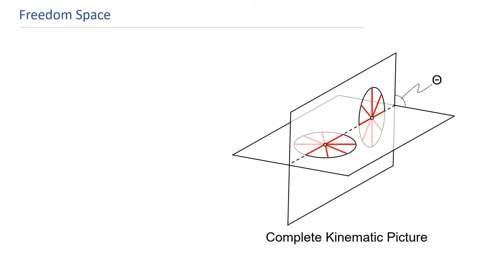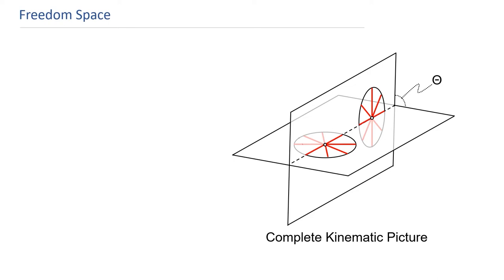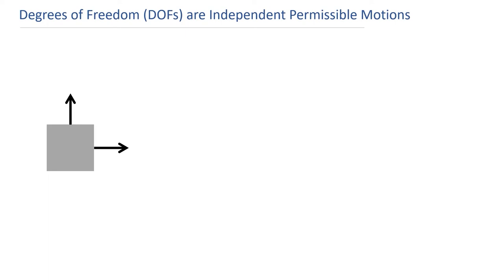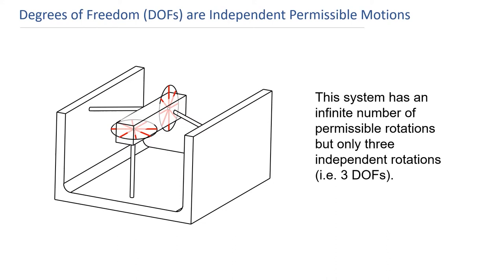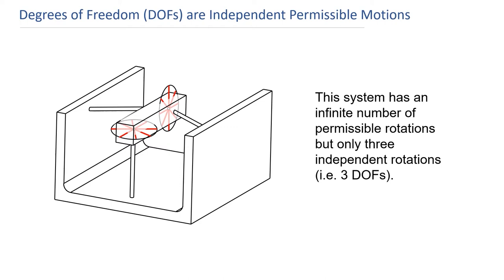A system's freedom space visually depicts its complete kinematics — in a single picture, it portrays all the ways a mechanism can freely deform with high compliance. But according to Maxwell's equation, a system with three constraints should only possess three degrees of freedom. So why did we find an infinite number of permissible rotation lines? Well, when a body achieves two translational degrees of freedom, it can also translate in any direction on the plane of those translations. A system with two translational degrees of freedom can translate in any direction as depicted by a disk of translations. Although the body achieves an infinite number of permissible translations, only two are independent — it is said to achieve two degrees of freedom. Similarly, although our system can achieve an infinite number of rotations within two disks, only three are independent, so the system has three degrees of freedom.